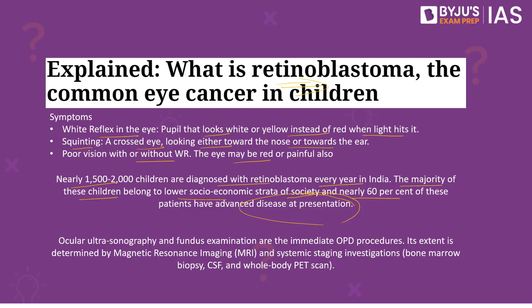When it comes to identification, ocular ultrasonography and fundus examination are the immediate OPD procedures. Its extent is determined by magnetic resonance imaging and systematic staging investigation, bone marrow biopsy, CSF, and whole body PET scan. These are the tests present to identify the presence of retinoblastoma.